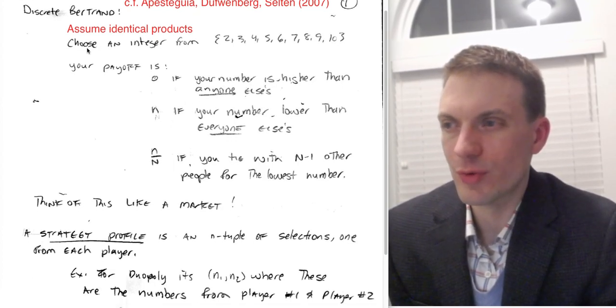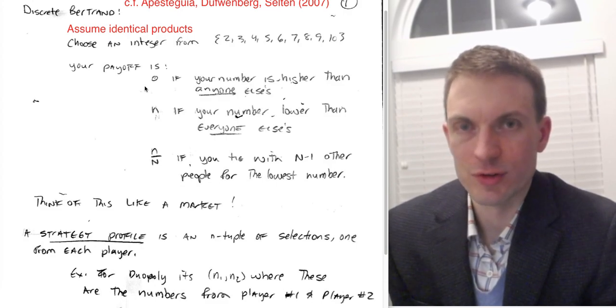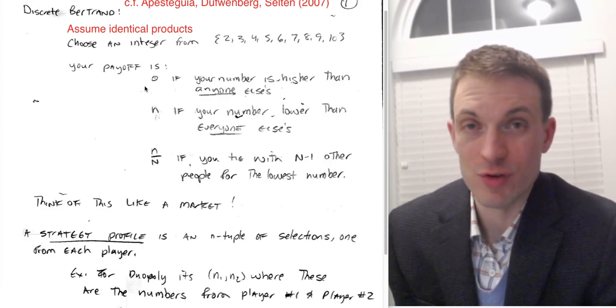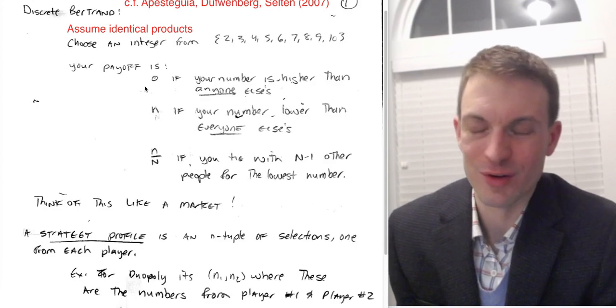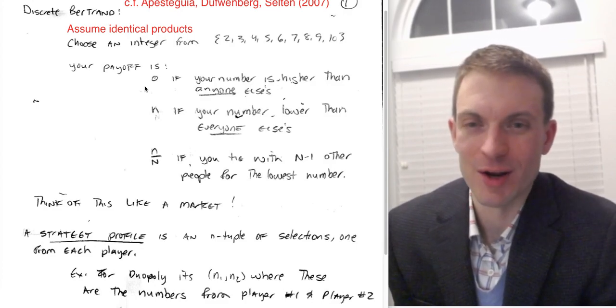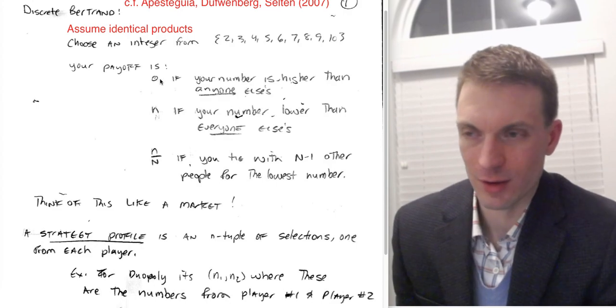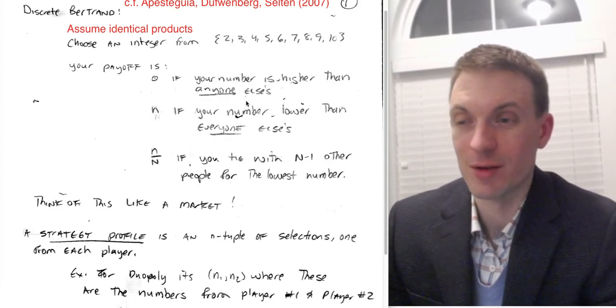Suppose we have players choosing an integer from this set, 2 up to 10. And then we'll assign payoffs as follows. You receive a payoff of 0 if you have the highest number, or if there's a duopoly and you have the high number out of the pair. If your number is higher than anybody else's.